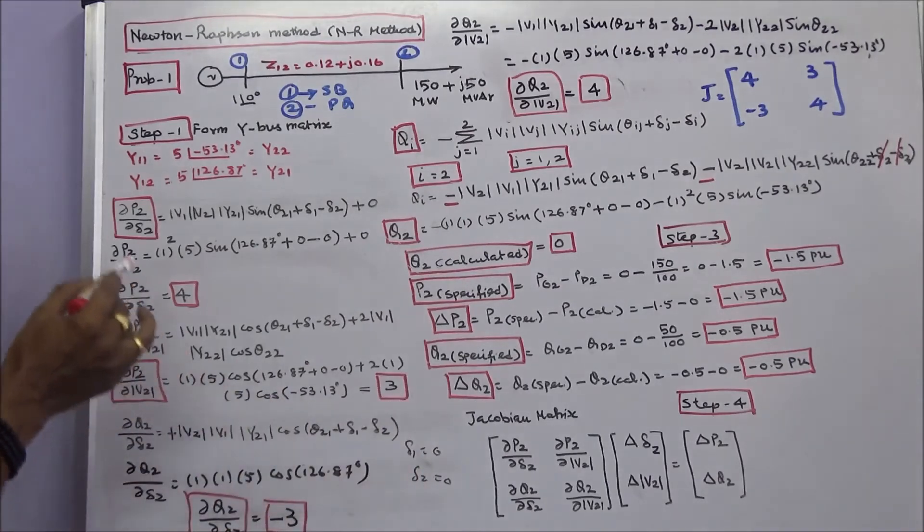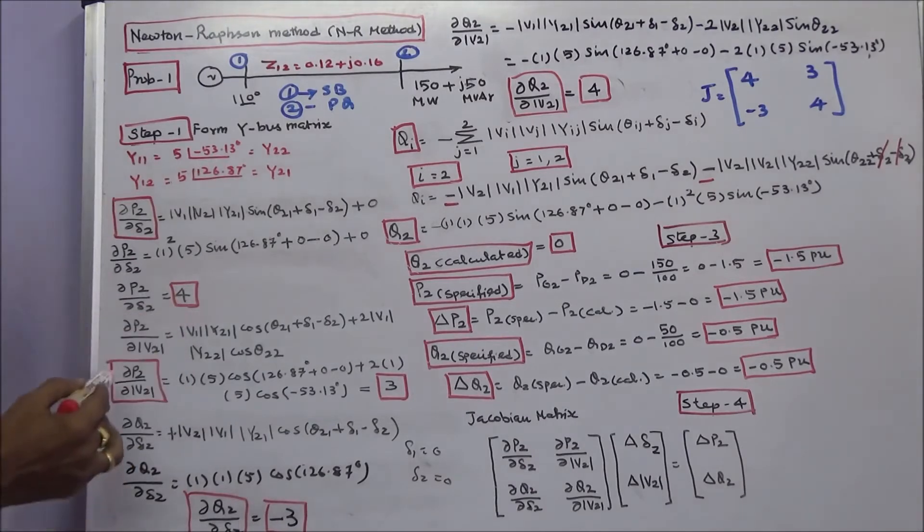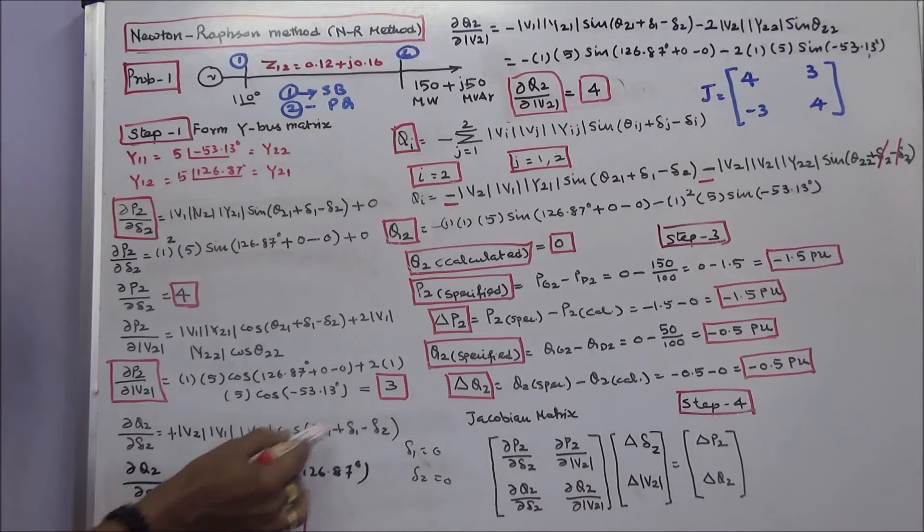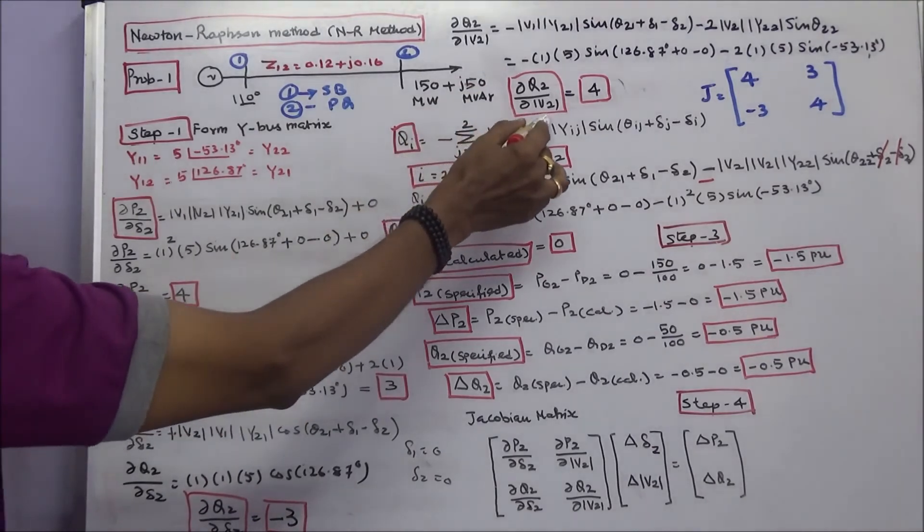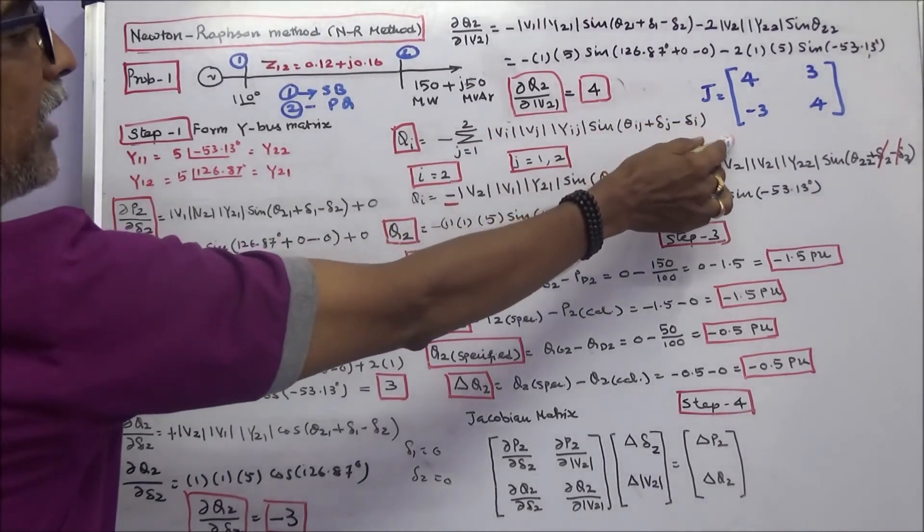Next, we have to calculate ∂P2/∂δ2 equals 4. ∂P2/∂|V2| equals 3. ∂Q2/∂δ2 equals minus E. ∂Q2/∂|V2| equals 4. So this is the Jacobian matrix.